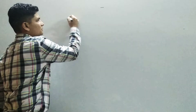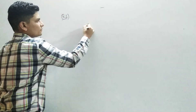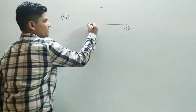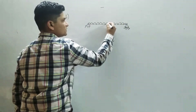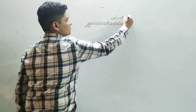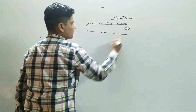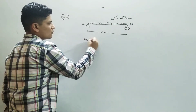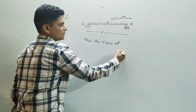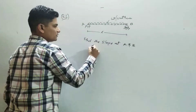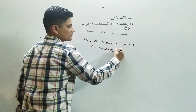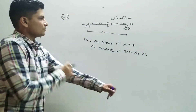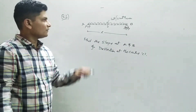Consider a simply supported beam with a hinge support at one end and a roller support at the other end, with point A and point B. A uniformly distributed load of intensity W per unit run acts over the entire span L. We need to find the slope at A and B and the deflection at the center, which is point C.